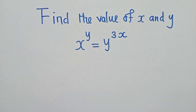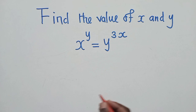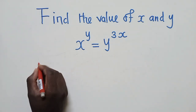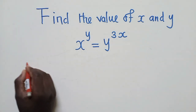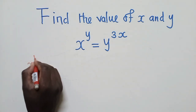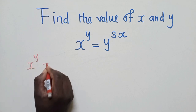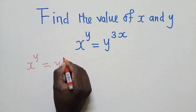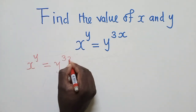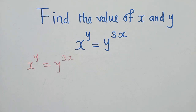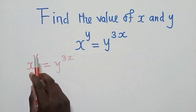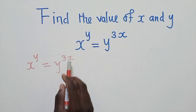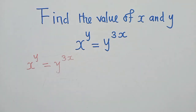So to work out this equation, we need to copy it as usual. We copy what we've been given, and this is very important. So this is what we have. Now, how can we find the value of X and Y? Y here and X — so the value of X and Y.